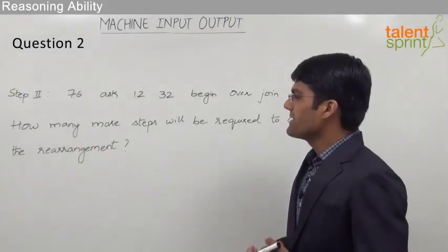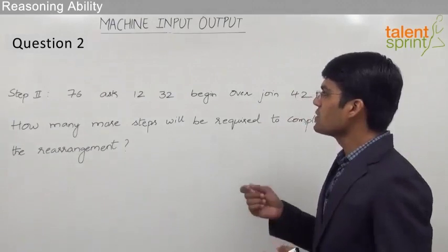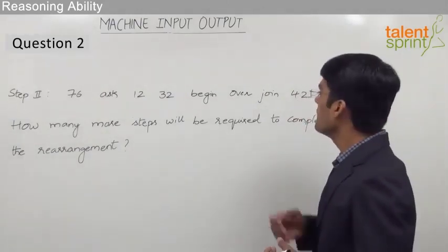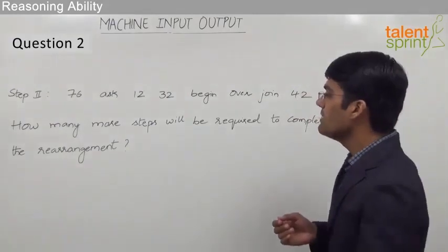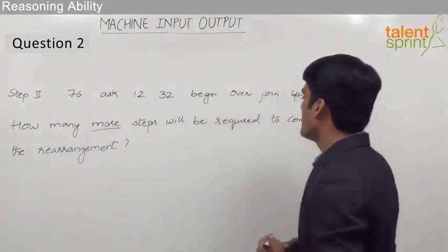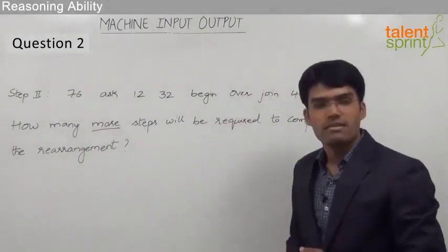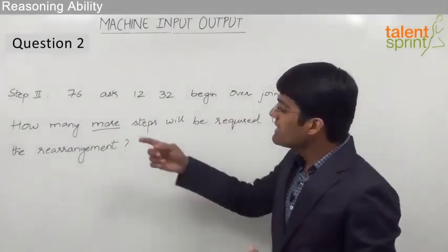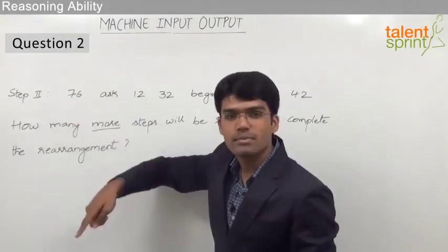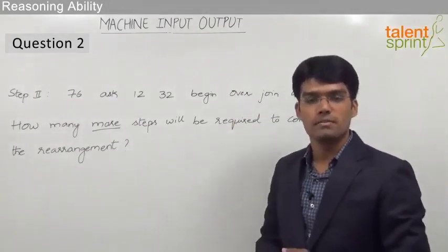Here the step 2 is 76 ask 1232 begin over join 42 and the question is how many more steps will be required to complete the rearrangement. So here we are supposed to complete the arrangement and find out how many steps more after step 2 are required to complete the arrangement.